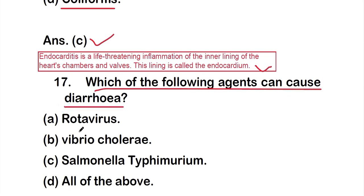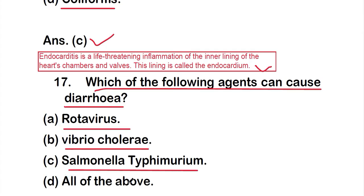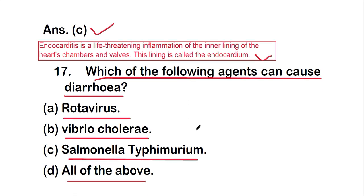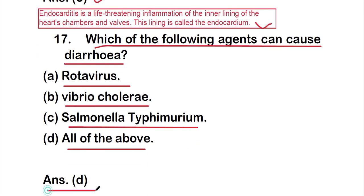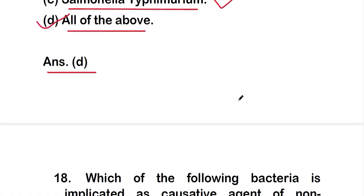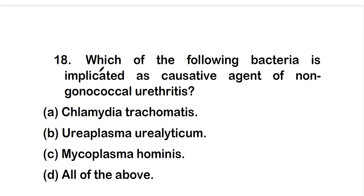Question 17: Which of the following agents can cause diarrhea? Options: option A: rotavirus; option B: Vibrio cholerae; option C: Salmonella typhi; option D: all of the above. The right answer is option D — rotavirus, Vibrio cholerae, and Salmonella typhi can all cause diarrhea.